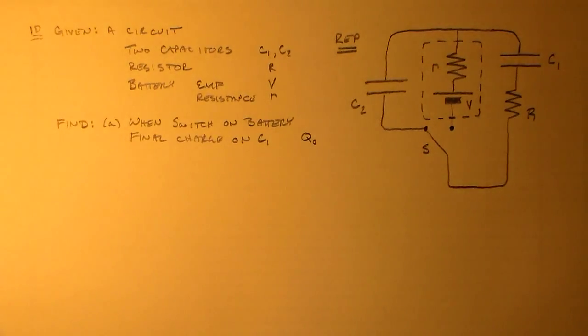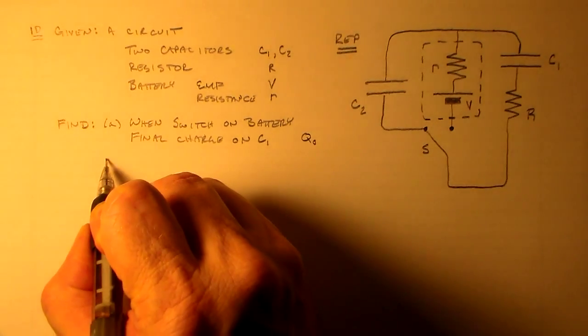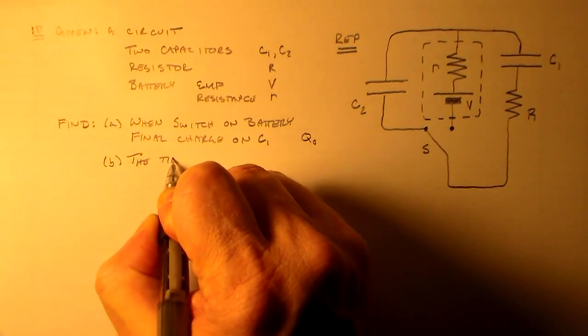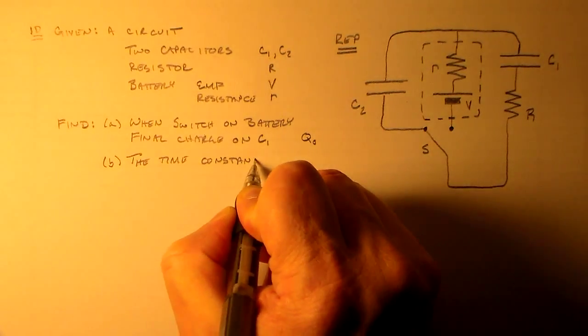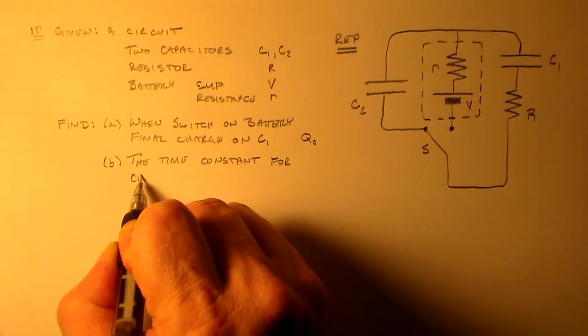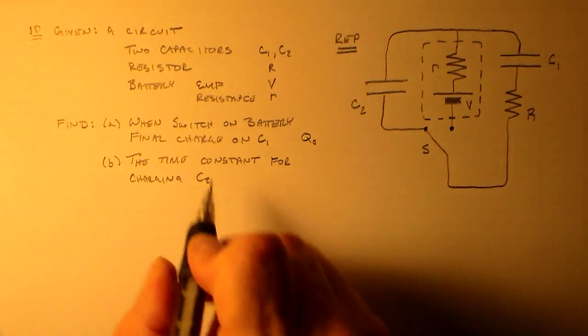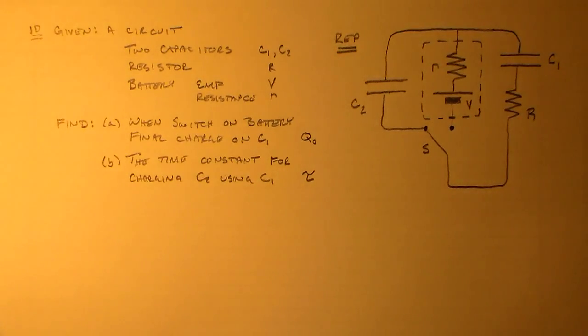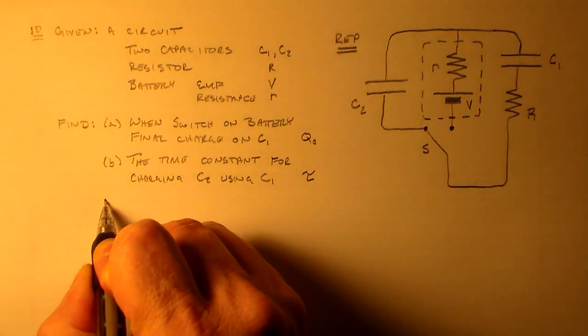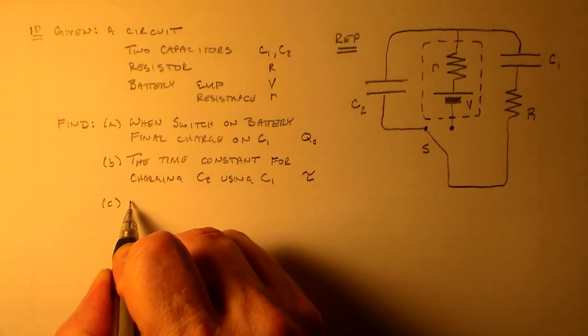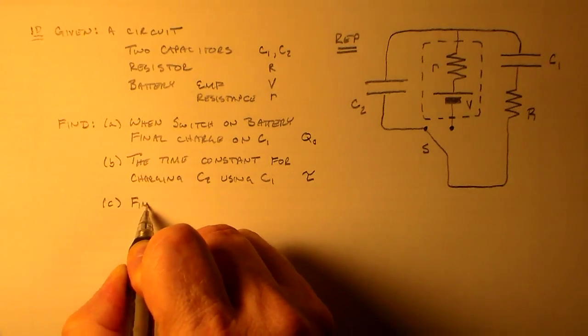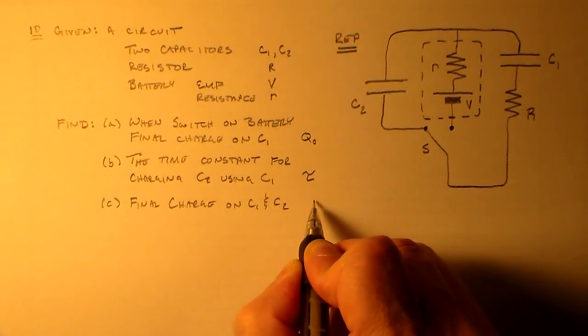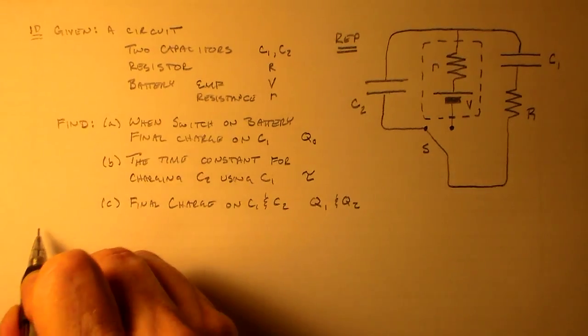And when I switch this switch over here, then we'll take the charge from this capacitor and put some of it on that capacitor. Okay? So, that's basically the gist of this problem. So, we've got battery, two capacitors, and a resistor. And we're going to look at some of the important things from the transients and stuff like that.